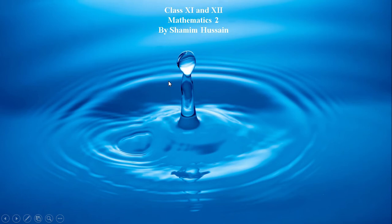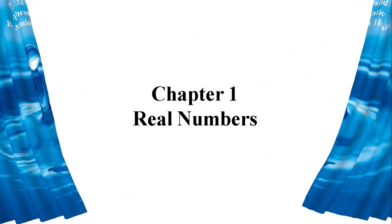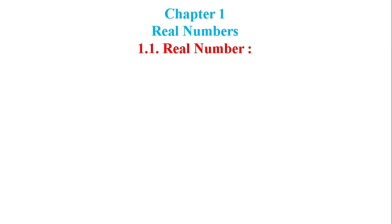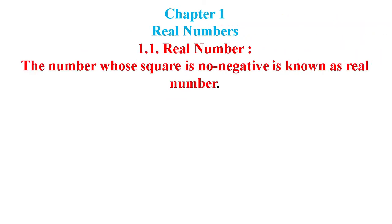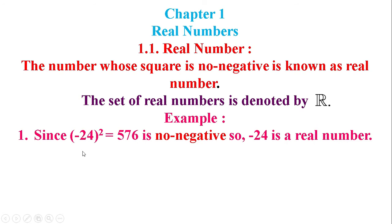Dear audience, welcome back. Today I am going to discuss about real numbers and the properties of real numbers. A real number is defined as a number whose square is non-negative. For example, the square of minus 24 is 576, which is non-negative, and that is why minus 24 is a real number.